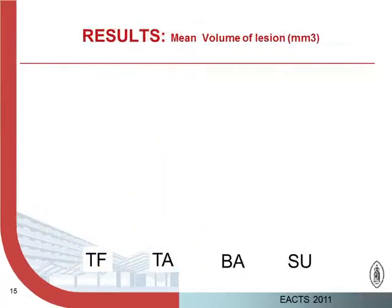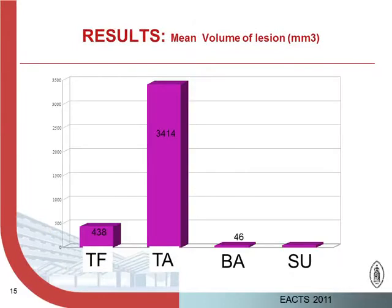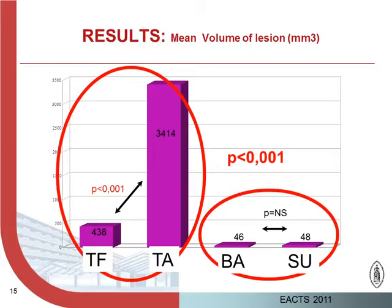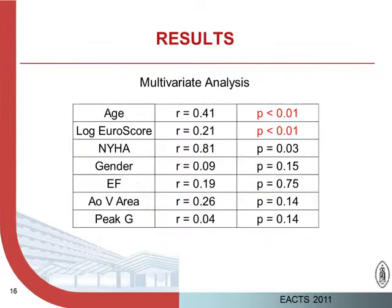If you look at the mean volume of lesions, these data are very concerning for transapical, because the volume of lesions is very high, and there is a clear difference between transfemoral and transapical. We do not have any explanation for that, and there is a clear difference between the TAVI group and the non-TAVI group. Multivariate analysis has been performed, and we only noted that age and EuroSCORE are predictive factors.